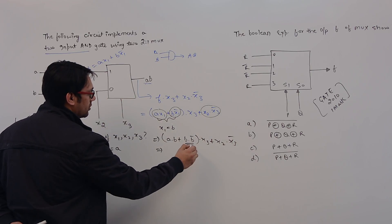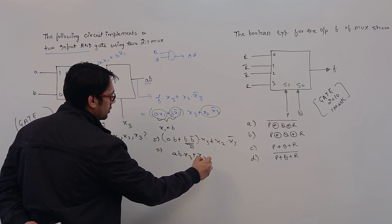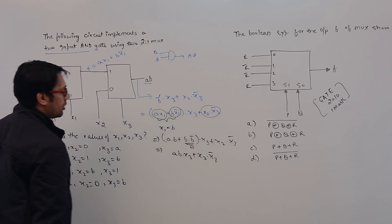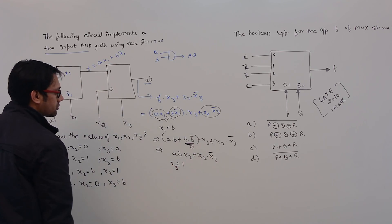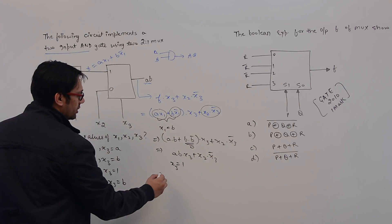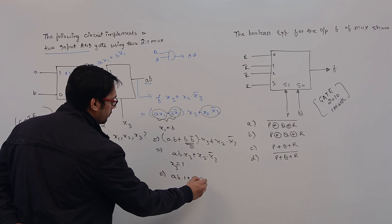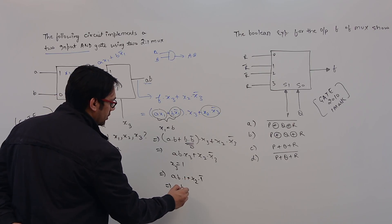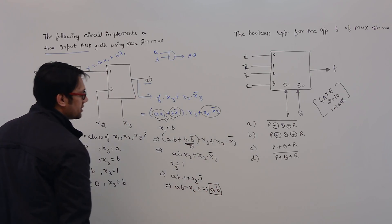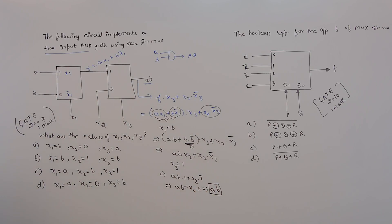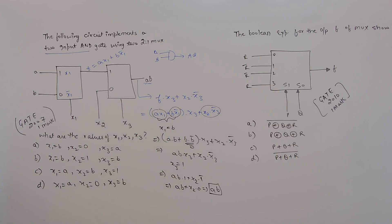Since B·B' = 0, this can be written as A·B·x3 + x2·x3'. Now if we take x3 as 1, then this becomes A·B·1 + x2·0, which equals A·B. So if we take x1 as B and x3 as 1, then for any value of x2 we get A dot B.